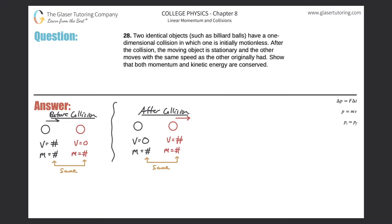Number 28. Two identical objects such as billiard balls have a one-dimensional collision in which one is initially motionless. After the collision, the moving object is stationary and the other moves with the same speed as the other originally had. Show that both momentum and kinetic energy are conserved.